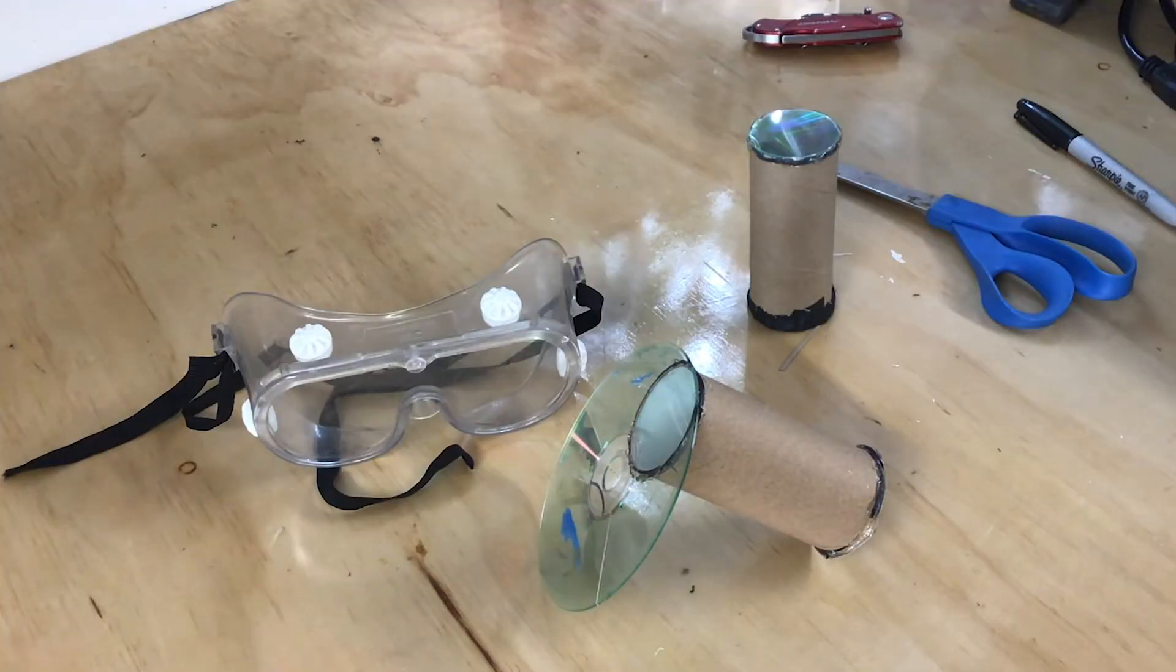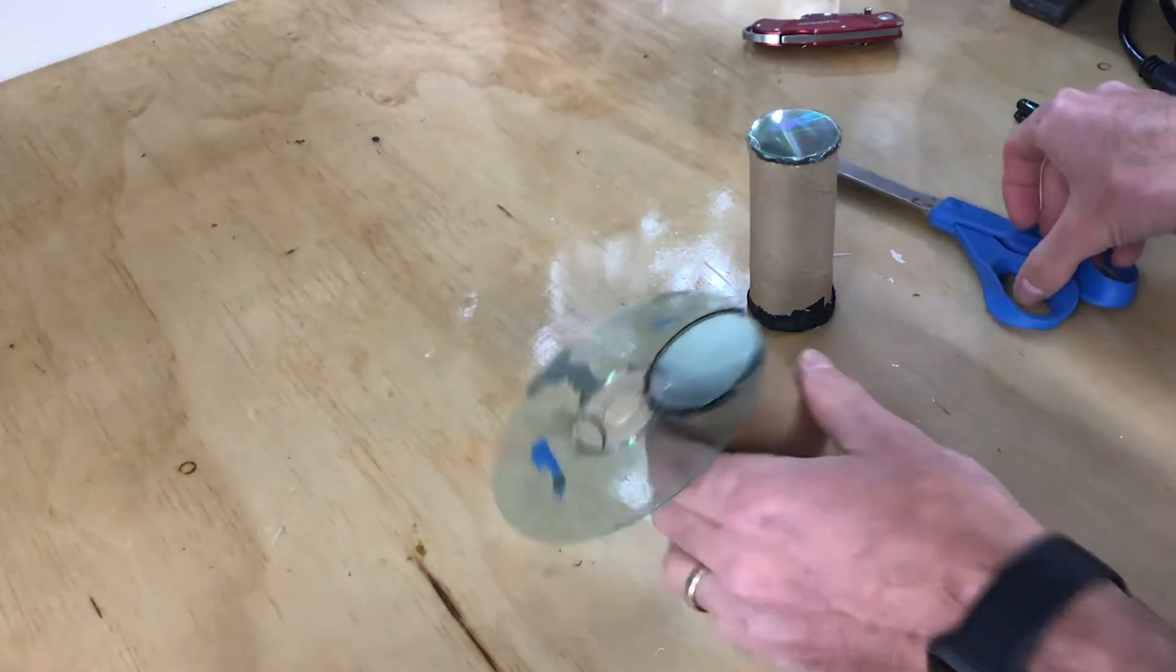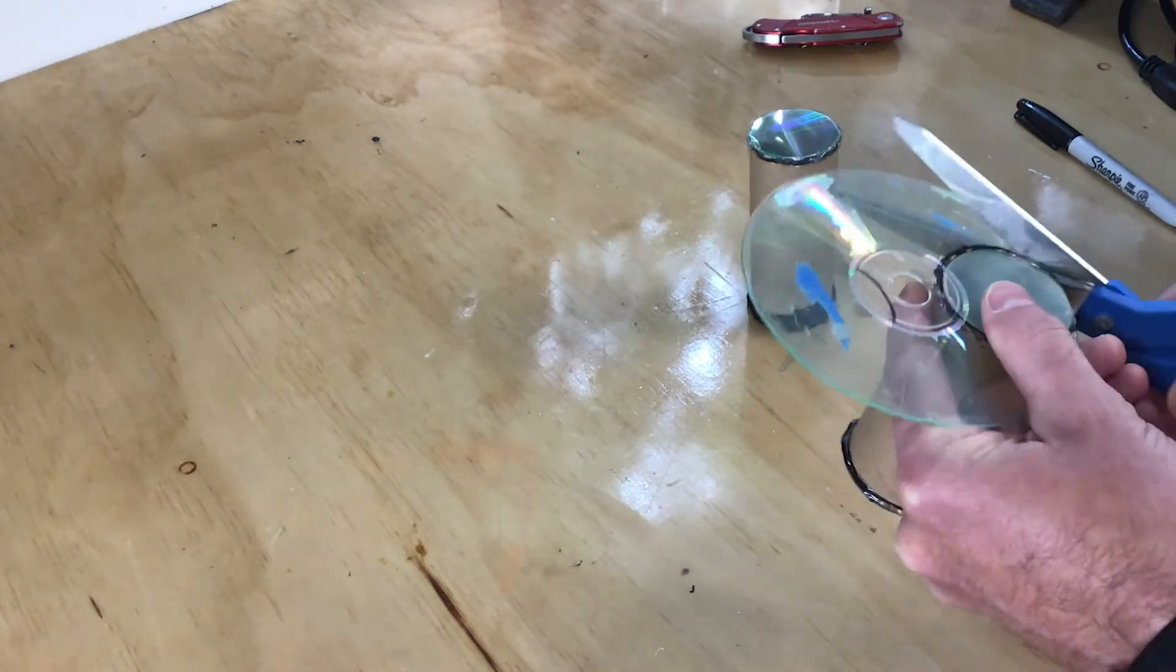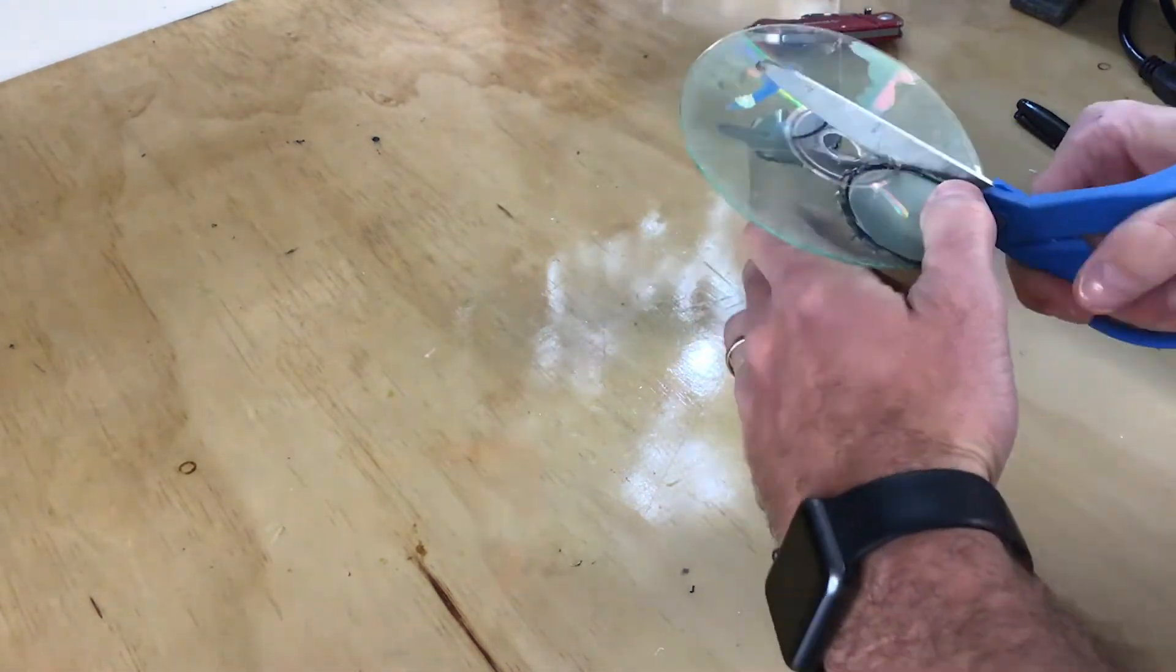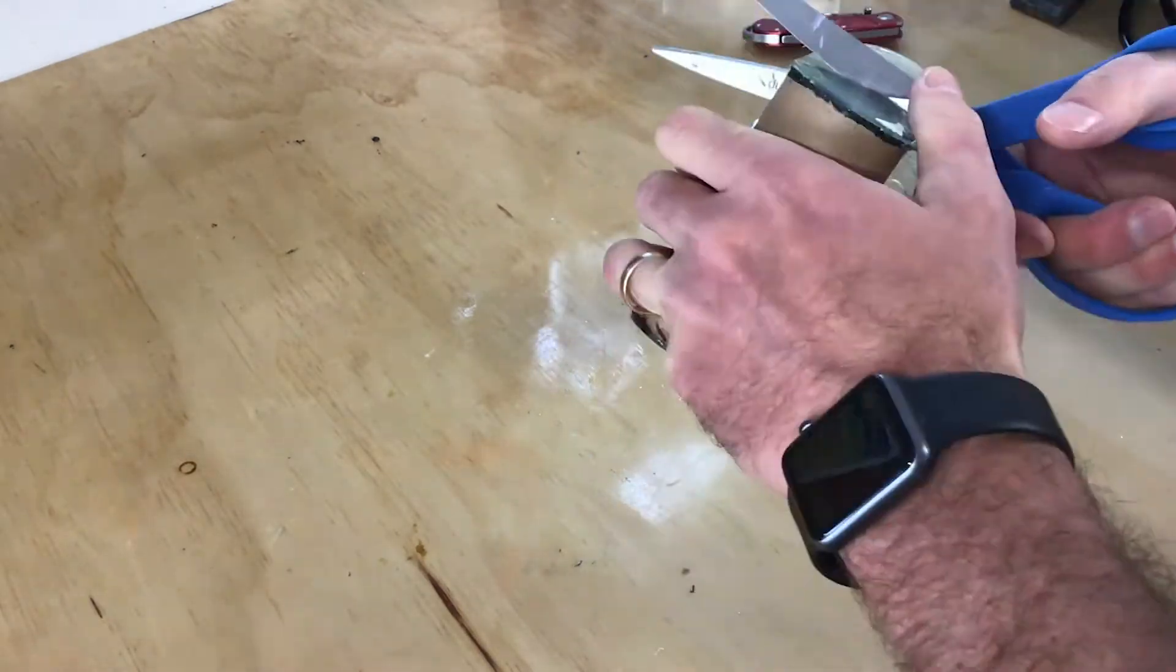Now this next part is optional but if you do want to do it, you definitely need safety goggles because cutting the plastic CD is a little hazardous. Little pieces will fly out. So you don't need to do this but if you do want to make it a little more compact, you can cut this part off.